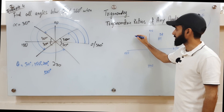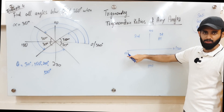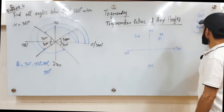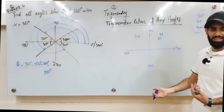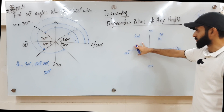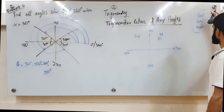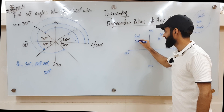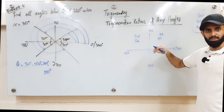In the second quadrant, we can only plug in a value between 90 and 180. If you plug in a value like 100 into all three functions, you'll notice it is only the sine function that turns out to be positive. The rest — cos and tan — are going to be negative in the second quadrant.